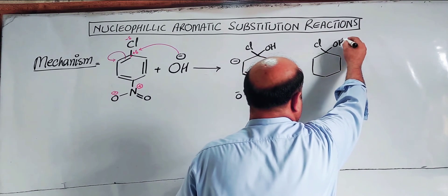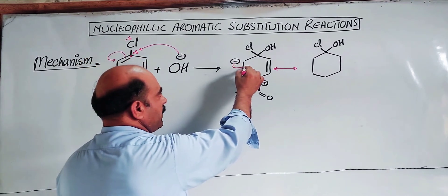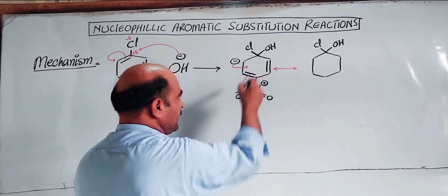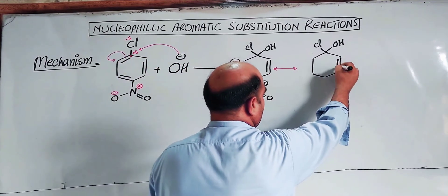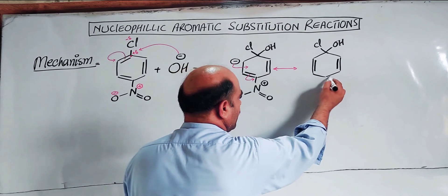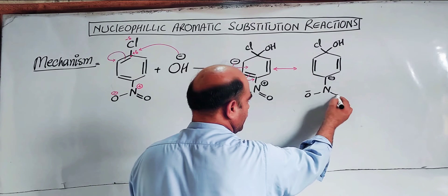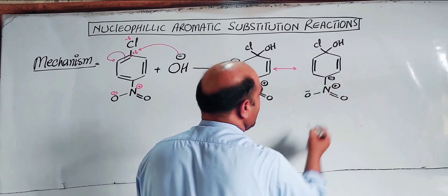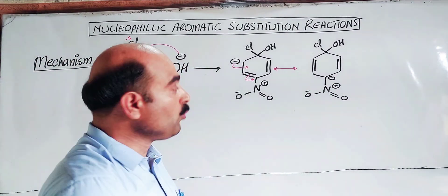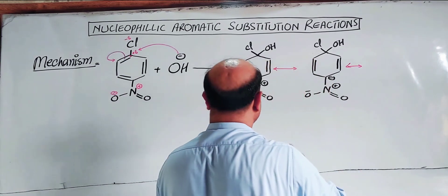The intermediate is anionic and through resonance the negative charge is delocalized. The NO₂ group at the ortho or para position helps stabilize this intermediate through resonance. The electron through resonance is stabilized by the nitro group. The resonance structures are equivalent, and the charge is distributed, stabilizing the intermediate before the leaving group departs.